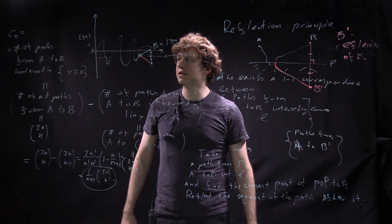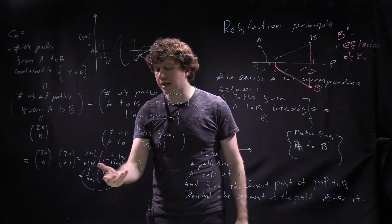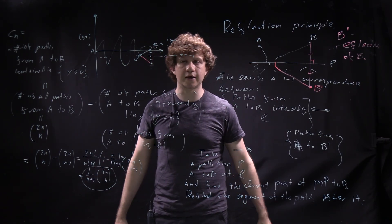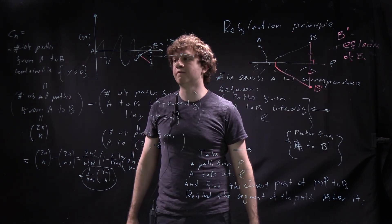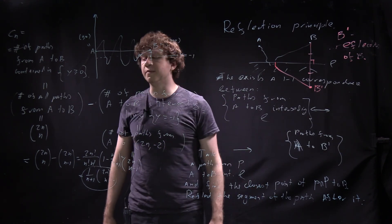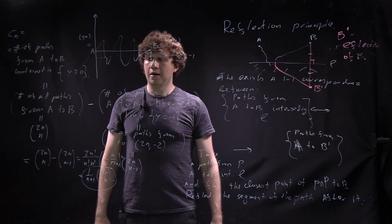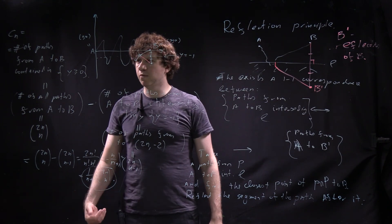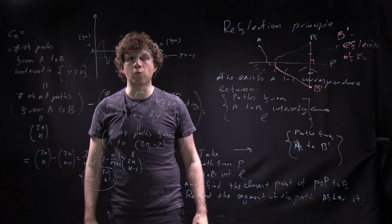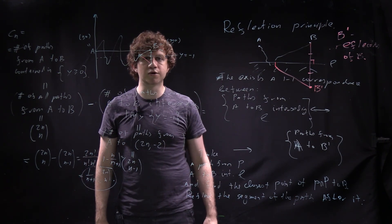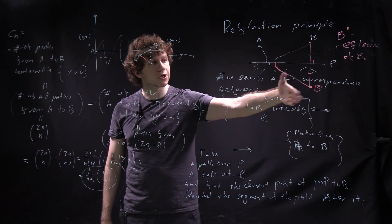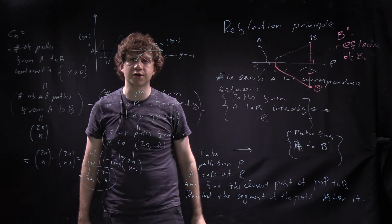In the next lecture, I'm going to give another proof of this formula based on the idea of generating functions, which is a very general approach to combinatorics of sequences. After that, we will leave combinatorics and talk about isometries of the plane, including symmetries, reflections, rotations, and such.